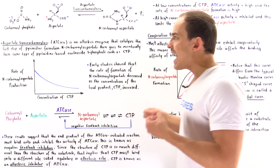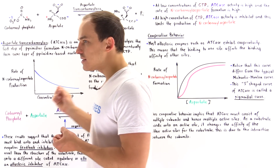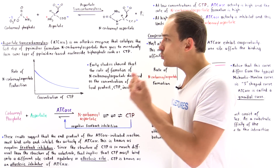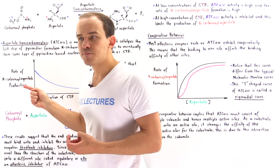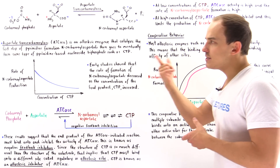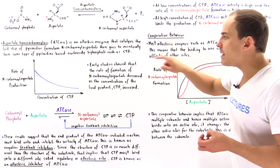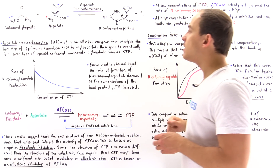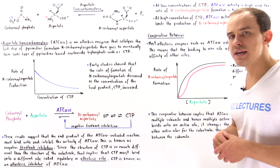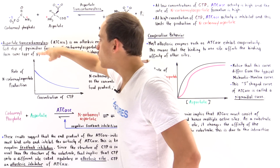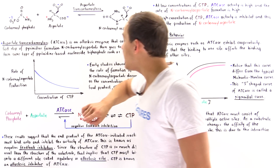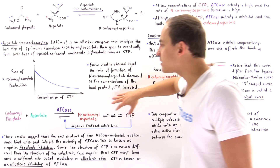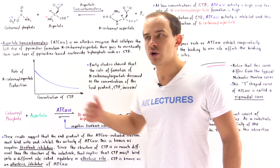The question is: how do we know that this enzyme is in fact an allosteric enzyme? How do we know that there exists a biological molecule inside our body that controls the activity of this enzyme? The first evidence came from early studies showing that the rate of formation of N-carbamoyl aspartate depends on the concentration of the final product, CTP. This is described in a graph where the y-axis is the rate of formation of N-carbamoyl aspartate and the x-axis is the concentration of CTP, the cytidine triphosphate.